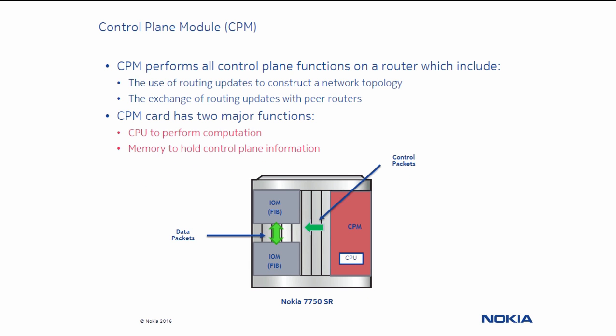This is why it is very important that the CPM module is protected from attacks, unwanted packets, and unauthorized access that can degrade the performance of the 7750 service router, or even make it unavailable.